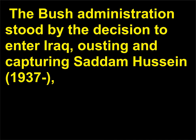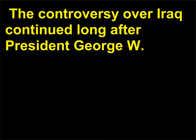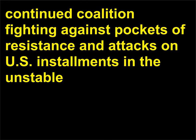The Bush administration stood by the decision to enter Iraq, ousting and capturing Saddam Hussein, 1937, saying it was a rogue state led by a despotic ruler who had the capability of aiding terrorist groups. The controversy over Iraq continued long after President George W. Bush, 1946, declared the end to major combat operations, as the casualty count climbed the result of continued coalition fighting against pockets of resistance and attacks on U.S. installments in the unstable nation.